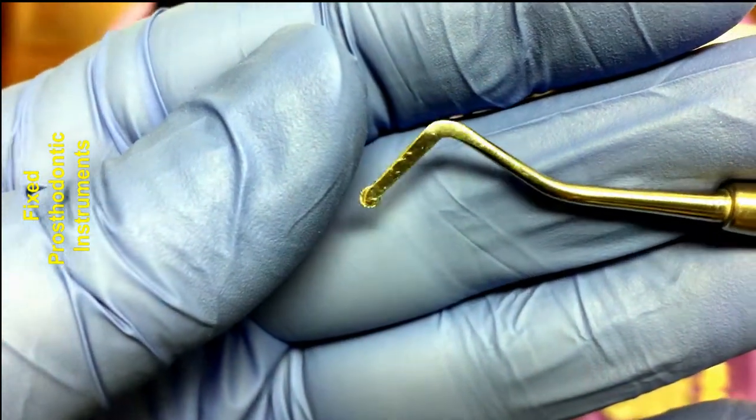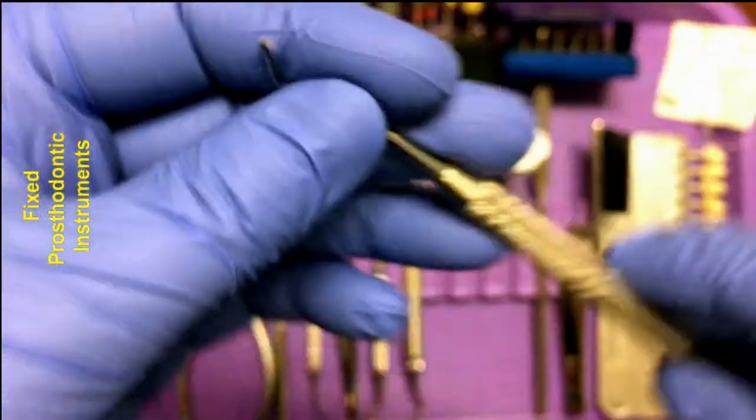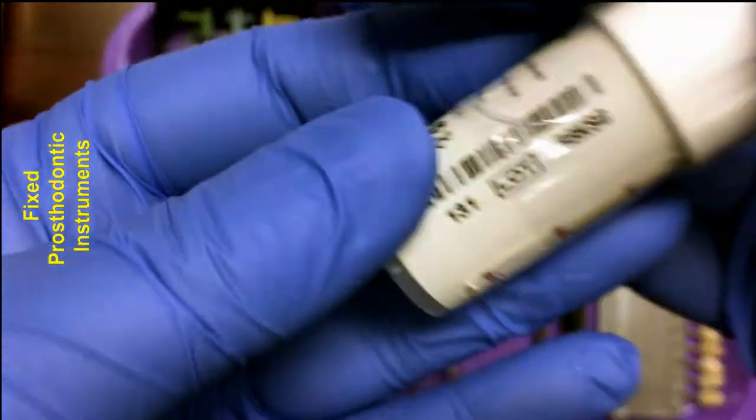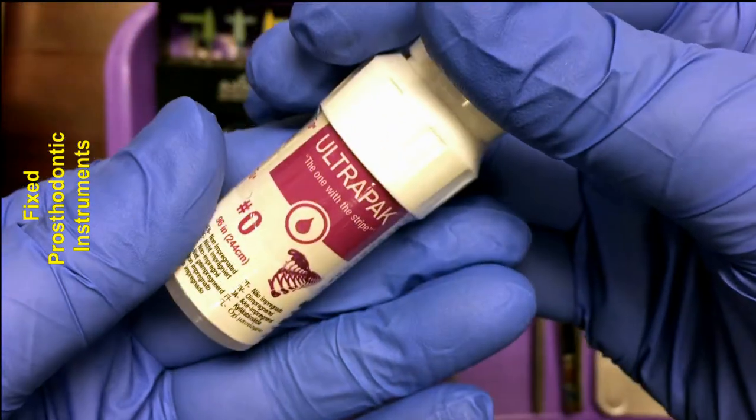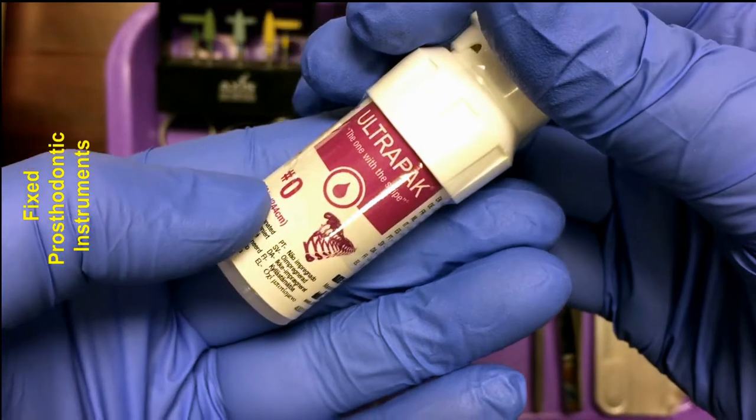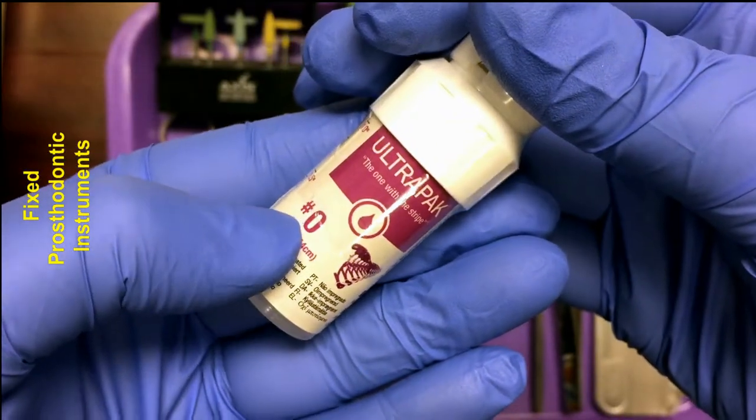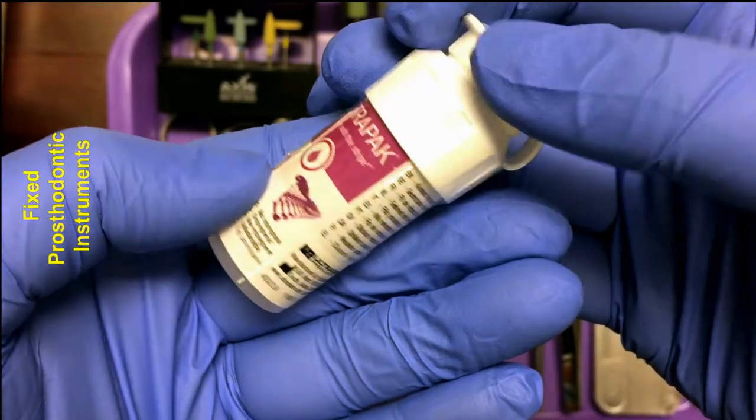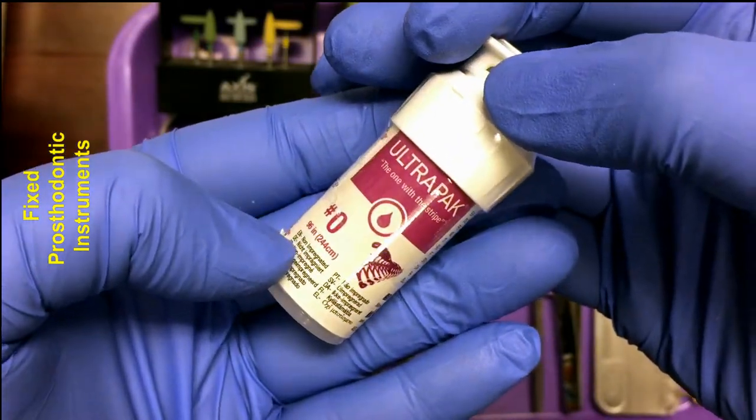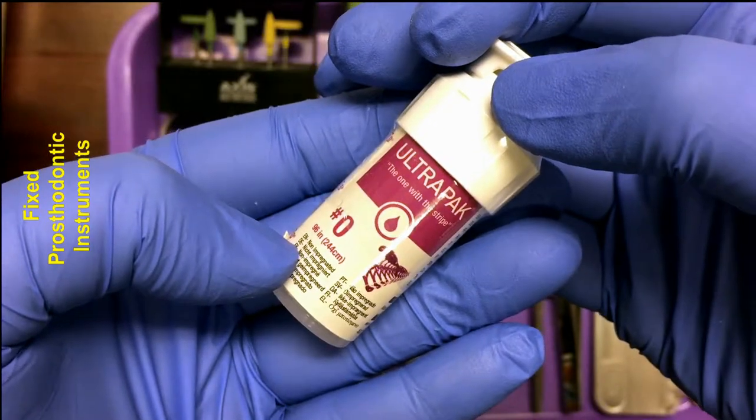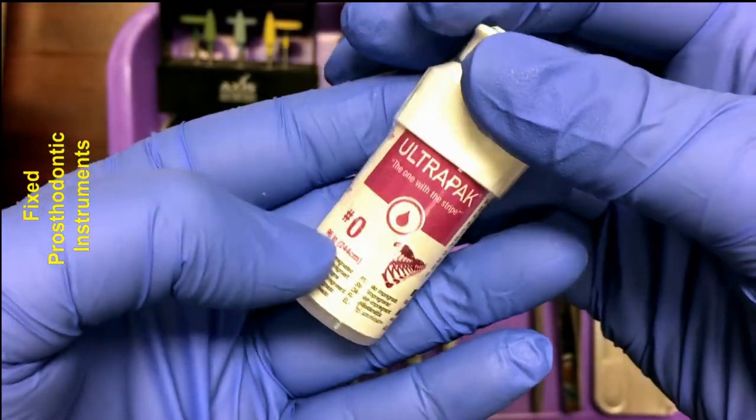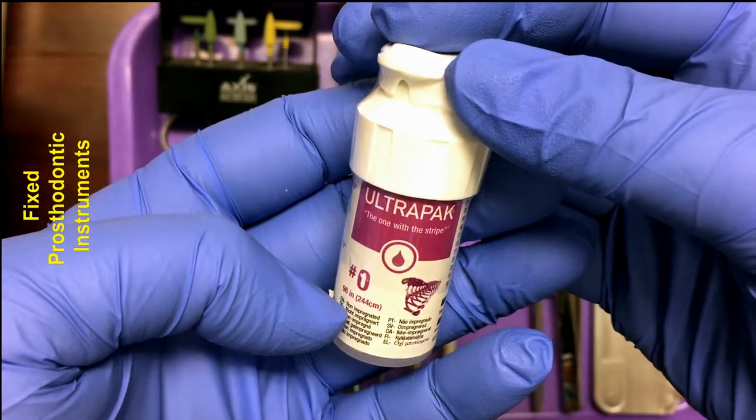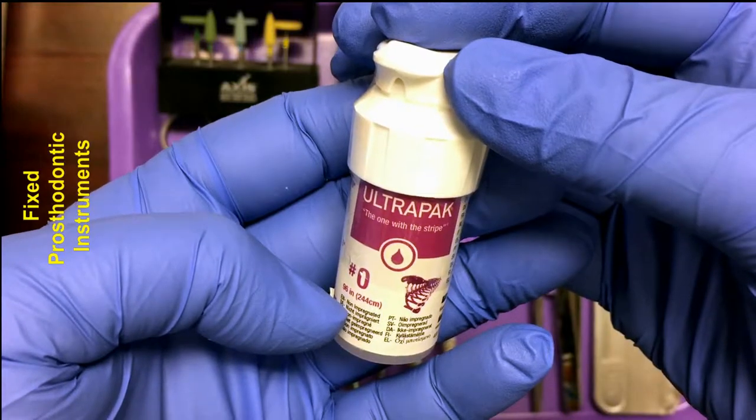Then we have the actual gingival retraction cord. Gingival retraction cord comes in different sizes. This one is zero, which is quite small, but it can also come in triple zero. The purpose of the gingival retraction cord is to widen the gingival sulcus. By widening the sulcus, it will allow the impression material to flow in to capture the anatomy during the impression. Cords can be knitted, braided, or twisted. They may be impregnated with epinephrine or other agents to help stop bleeding.